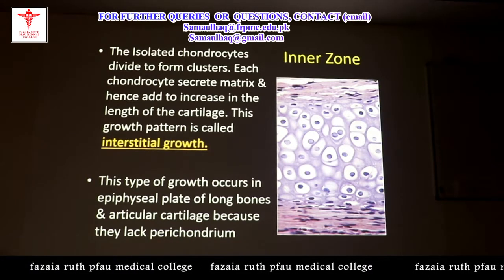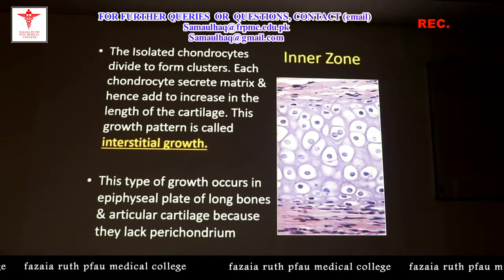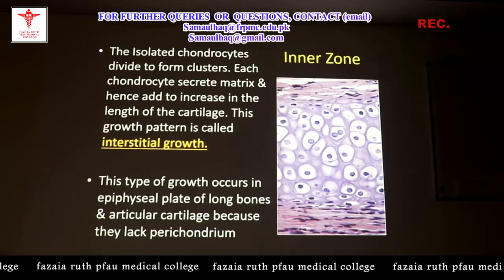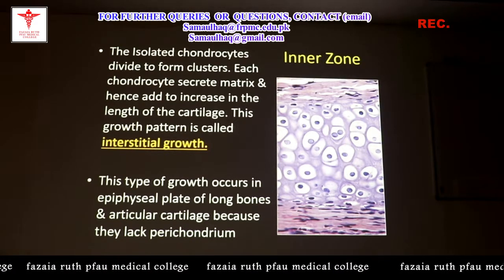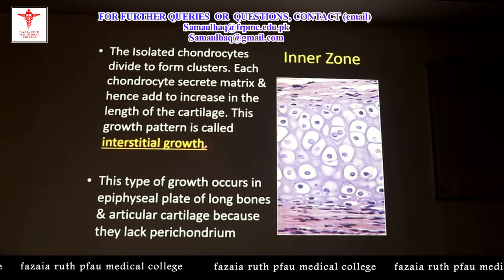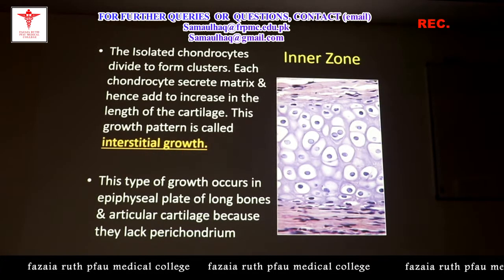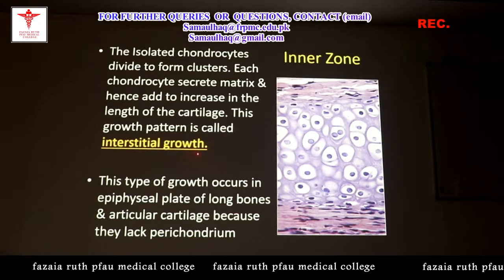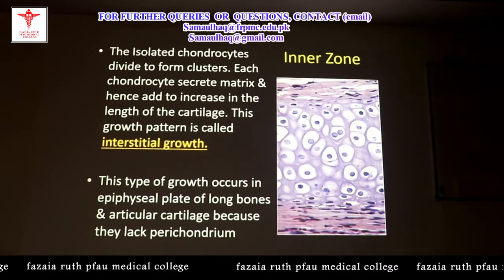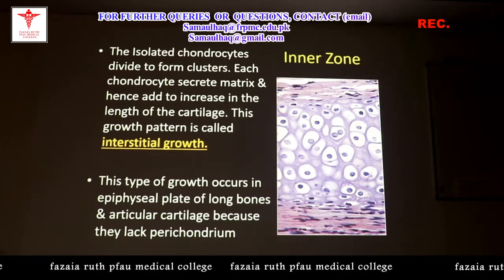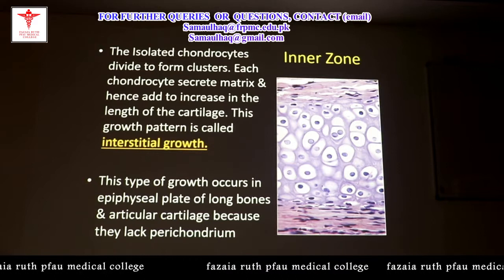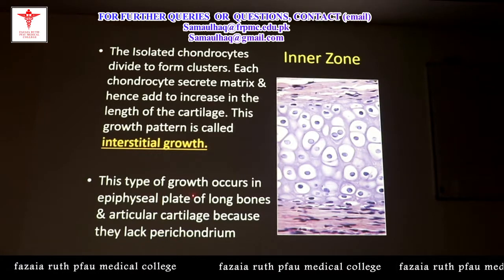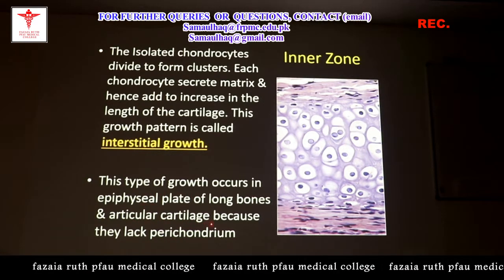Each chondrocyte secretes matrix, hence adding to the increase in length of the cartilage. The major factor for the length of cartilage depends upon the secretion of chondrocyte matrix. This type of growth — from the inner cellular structure — is known as interstitial growth, and it occurs in the epiphyseal plate of long bones and articular cartilage.